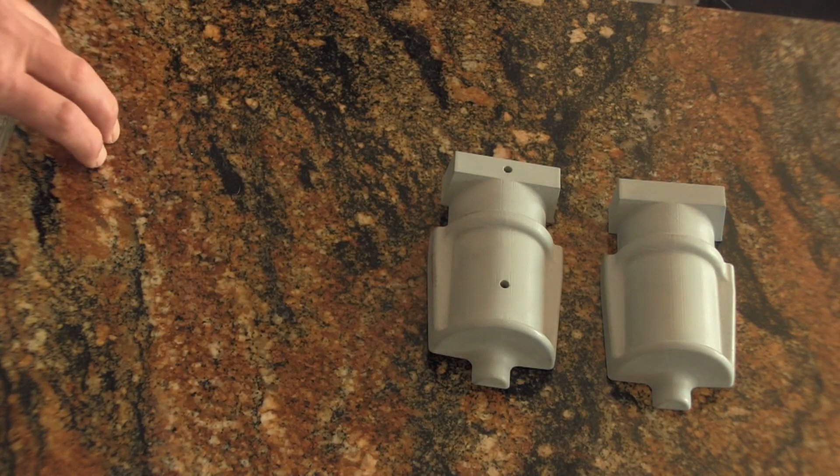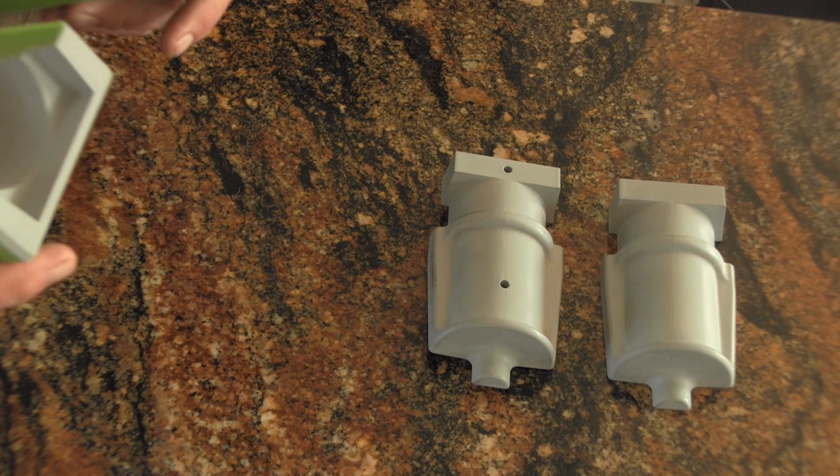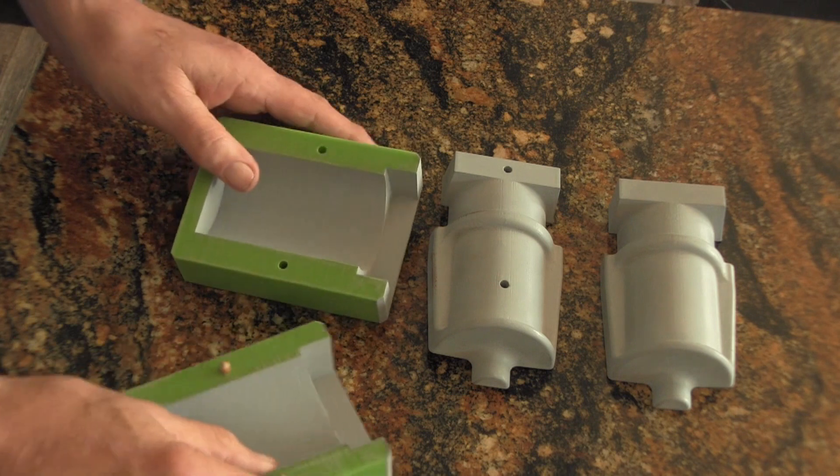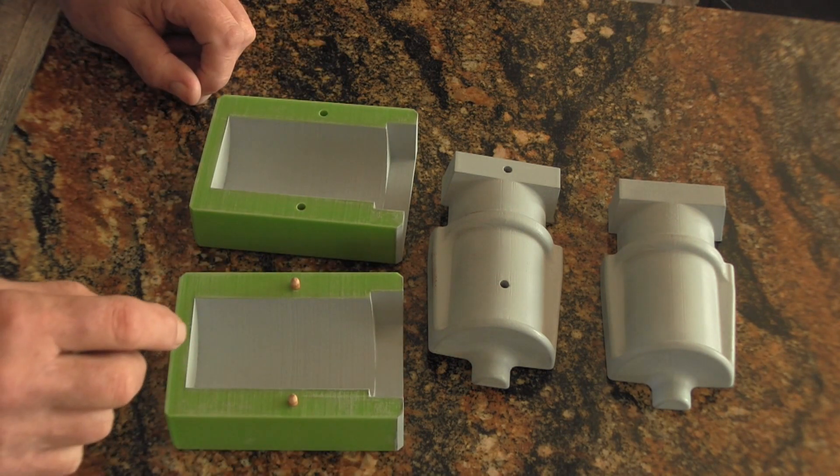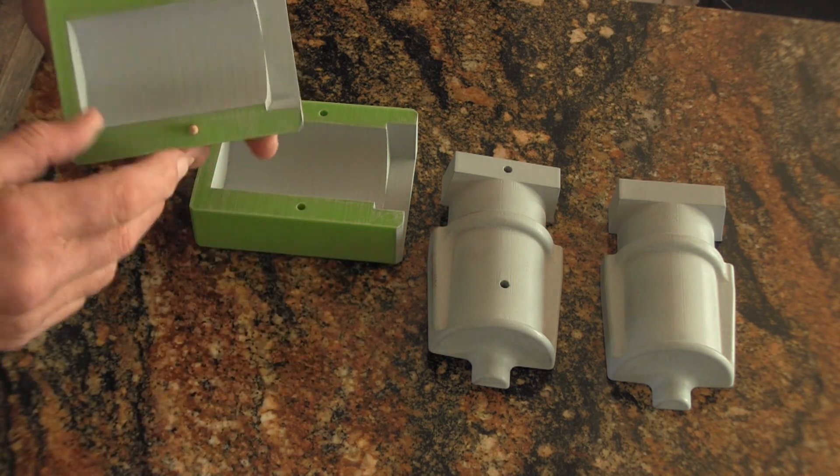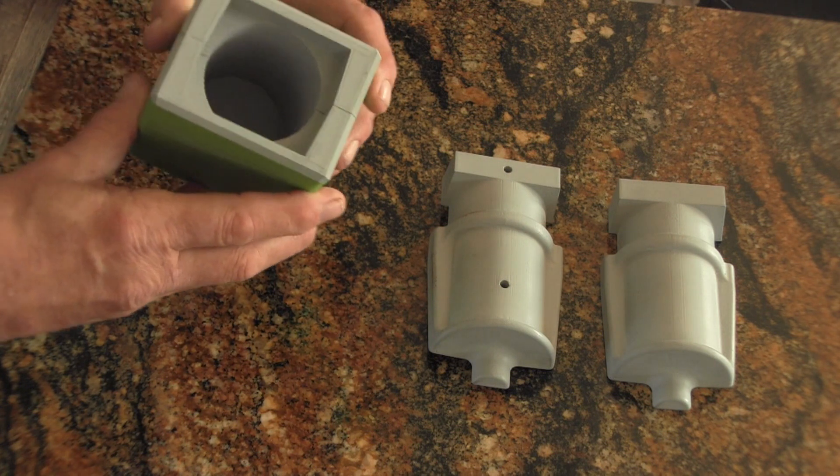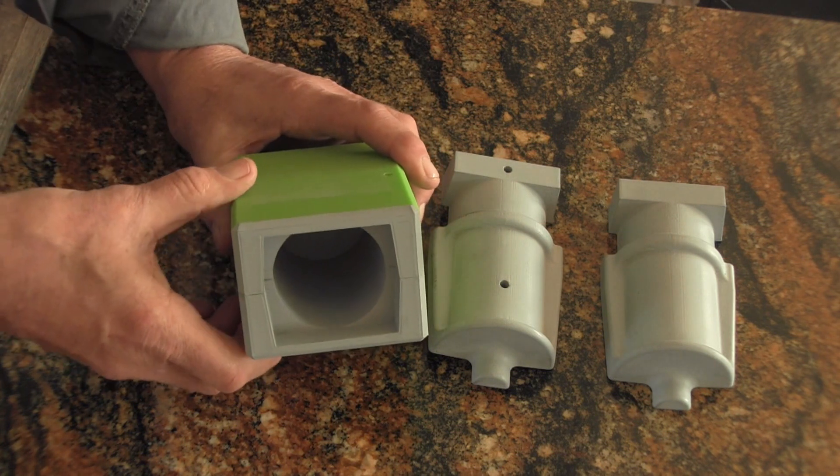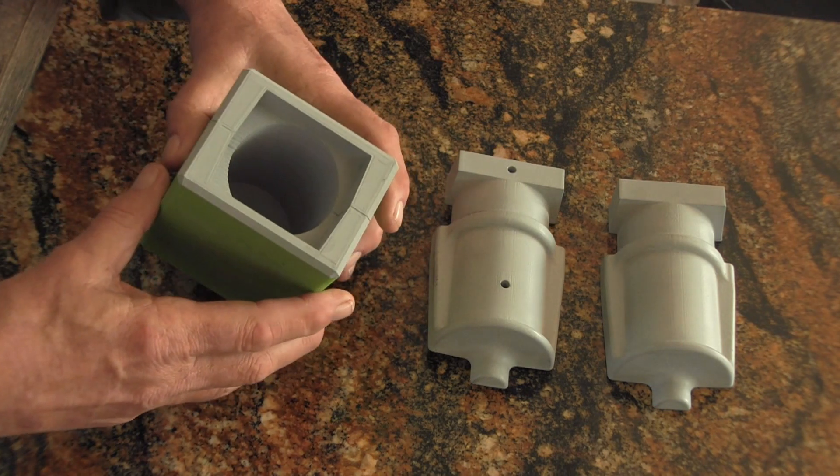And then you saw the model of the core box. So here's the completed core box, both halves. And the nice part about it is they don't have to glue anything together. It is put together like so, clamp it, ram it full of sand. I'll be using CO2 sand.